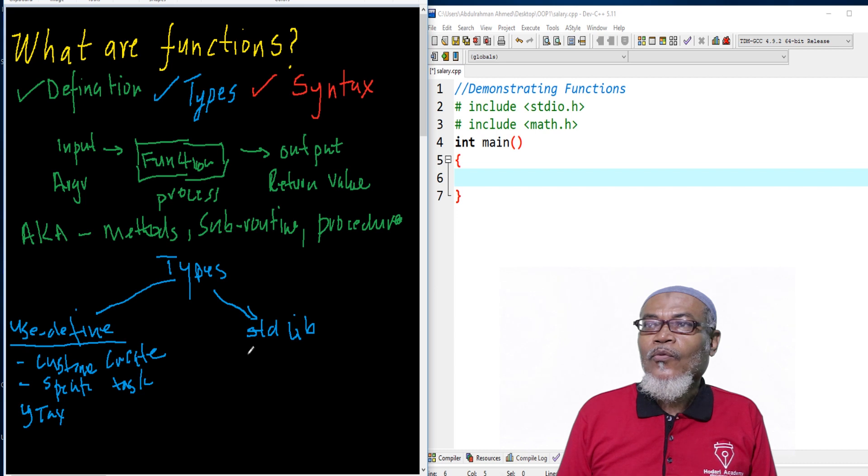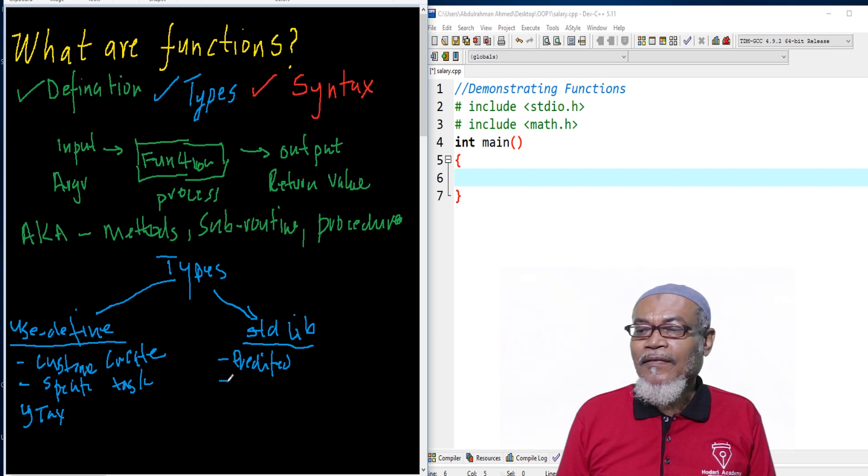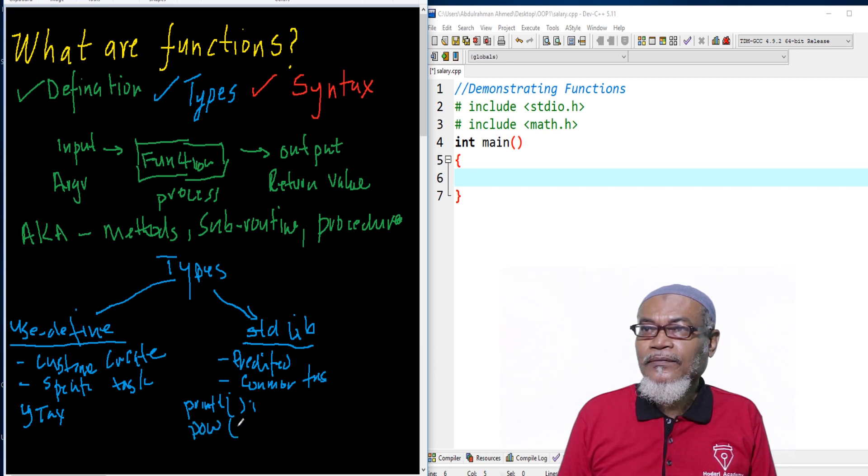The standard library functions, these are predefined functions which are found on a library within C programming. This particular one, they are meant to do those common tasks. Examples for these ones will be the printf function, the power of function, the square root function, among others.